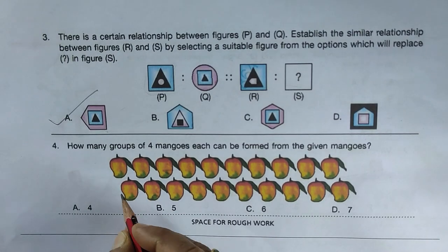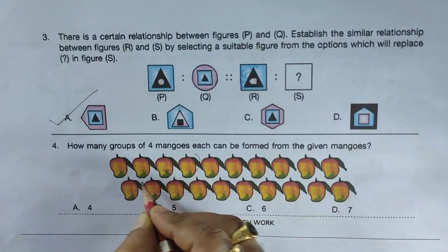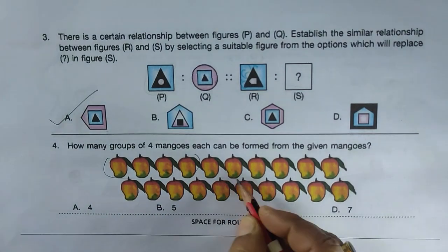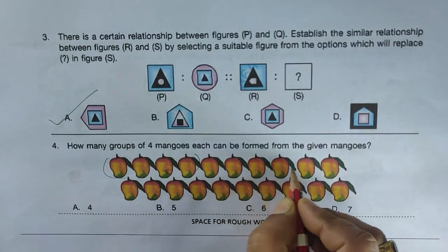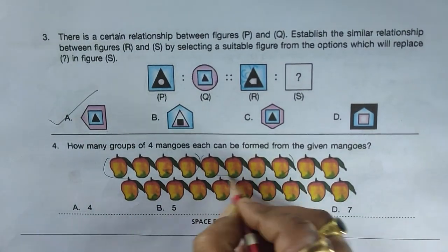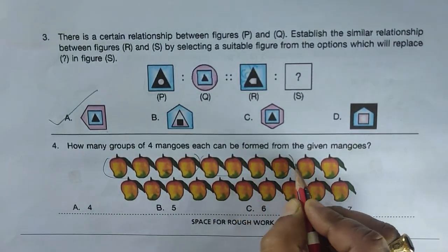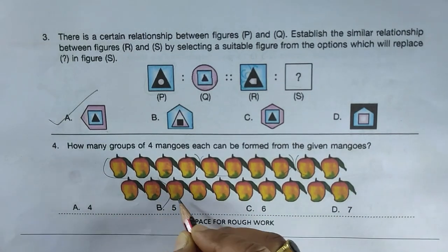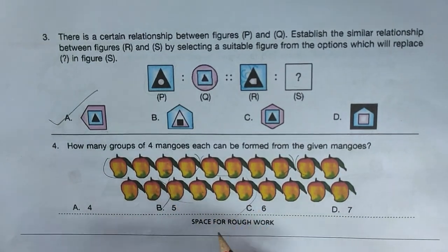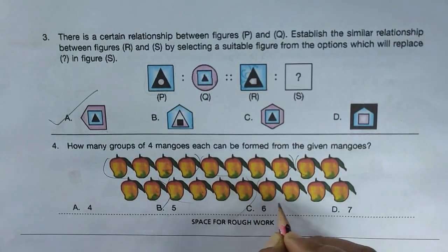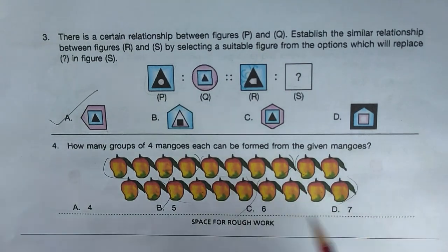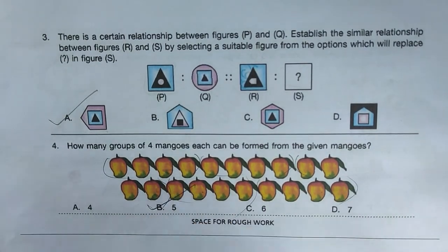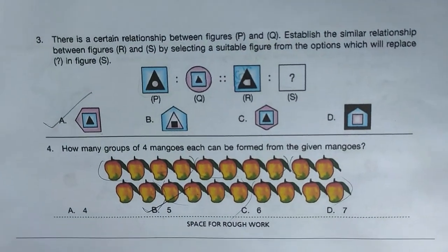Question: how many groups of four mangoes each can be formed? Grouping: first group of four, second group of four, third group of four, and fifth group — there are five groups total. Hence option B is the right answer.